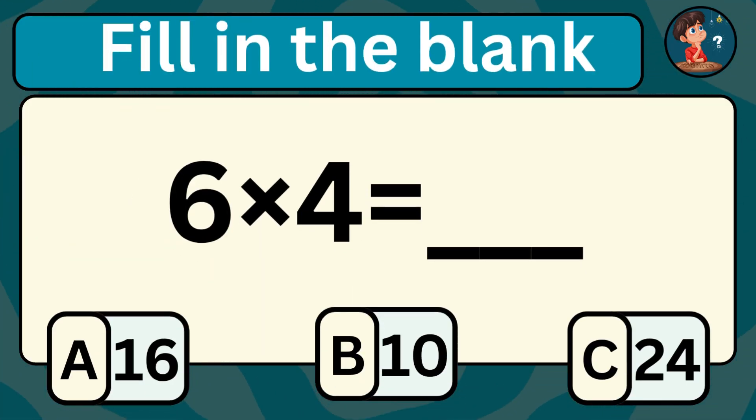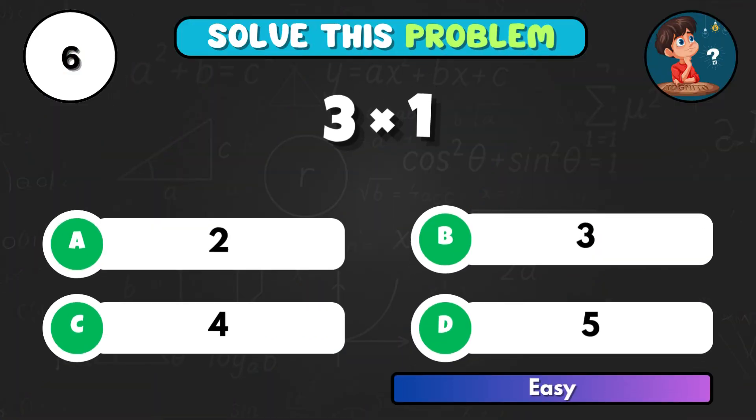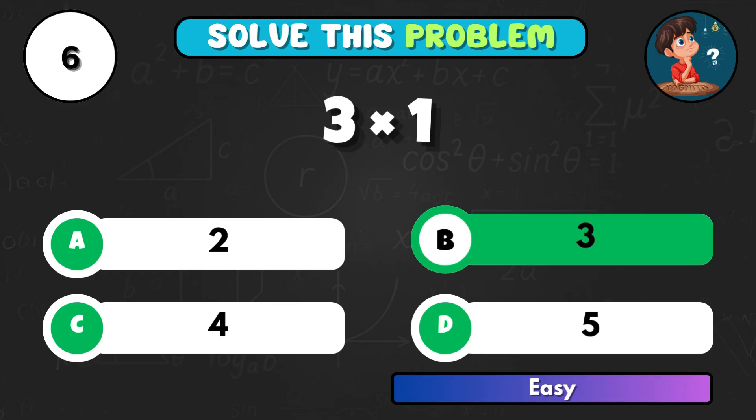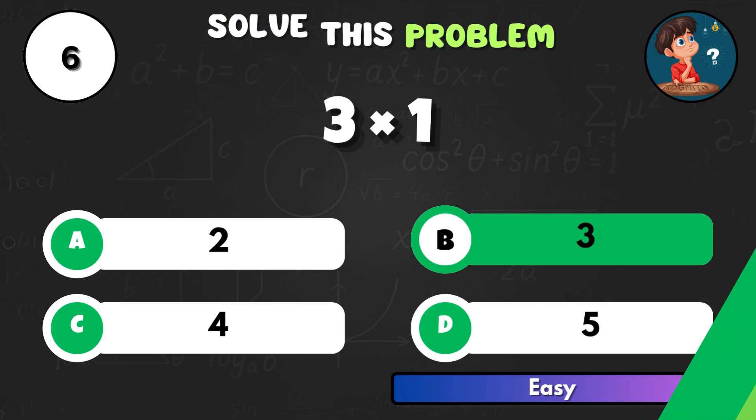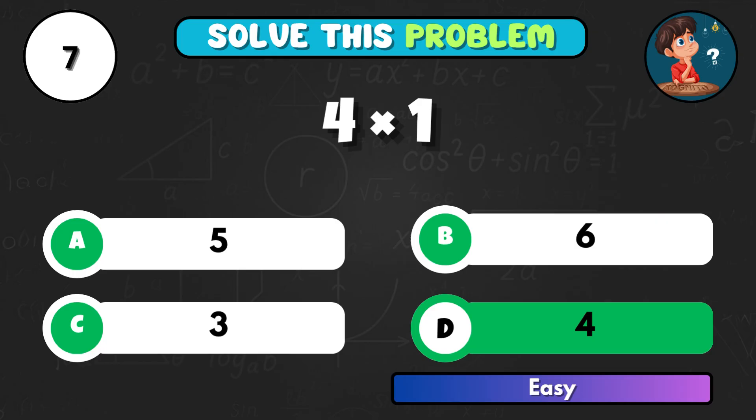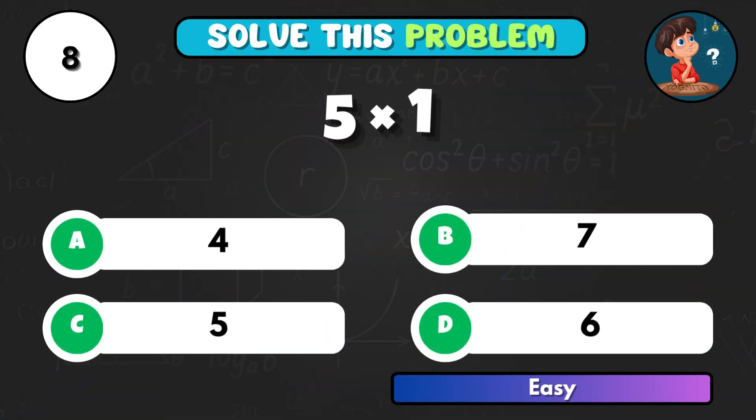Here's your next question. What is 6 times 4? Quick check! 3 times 1, what's the result? Option B is correct, 3. Moving on! 4 multiplied by 1. That's D, 4. Next one, 5 times 1.